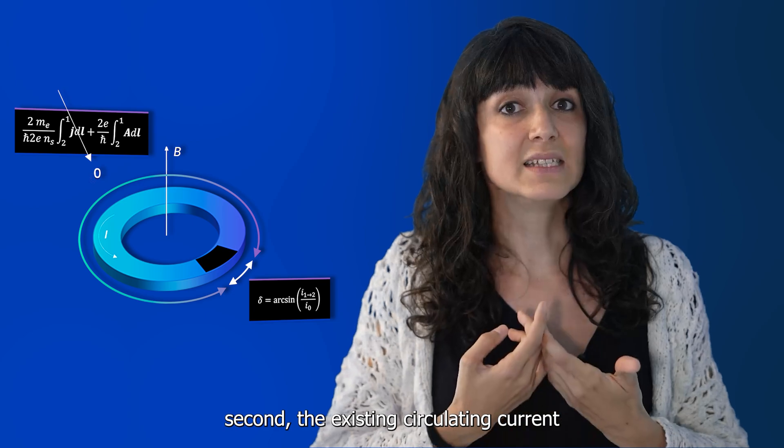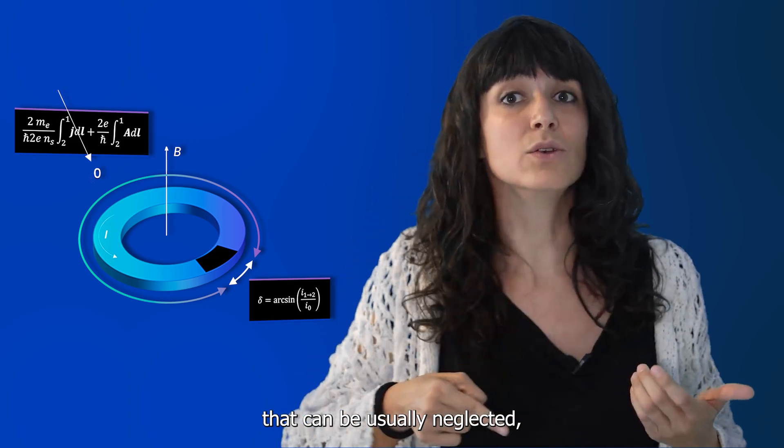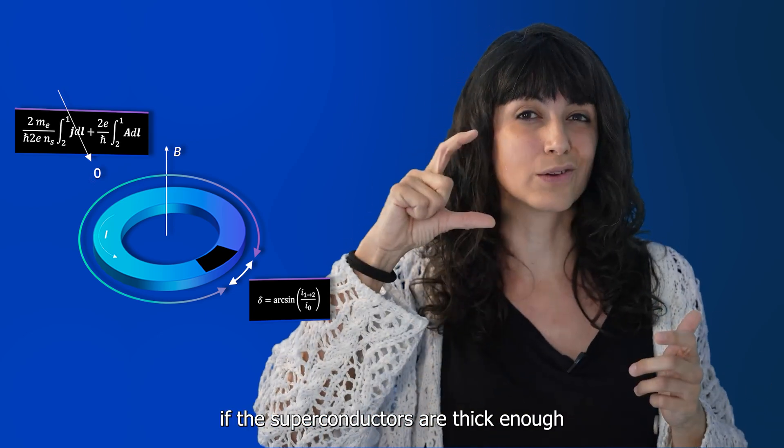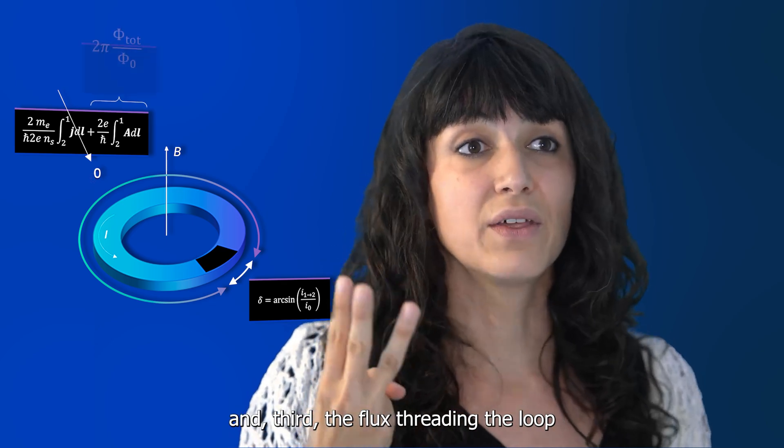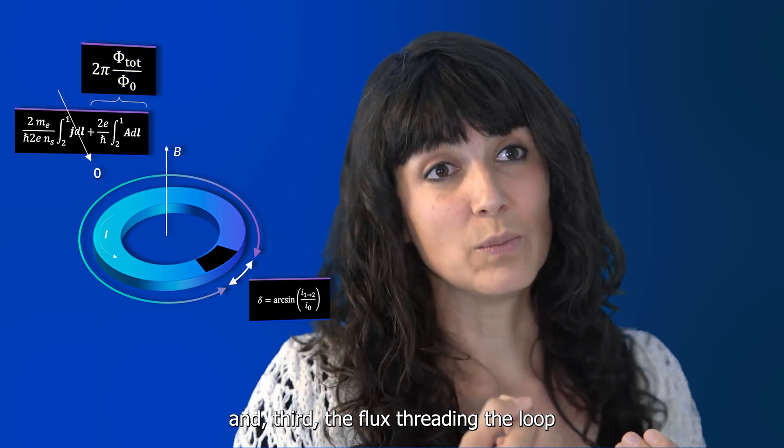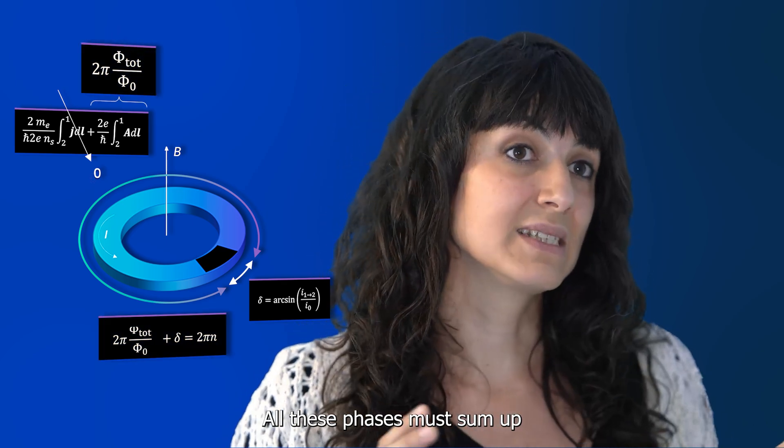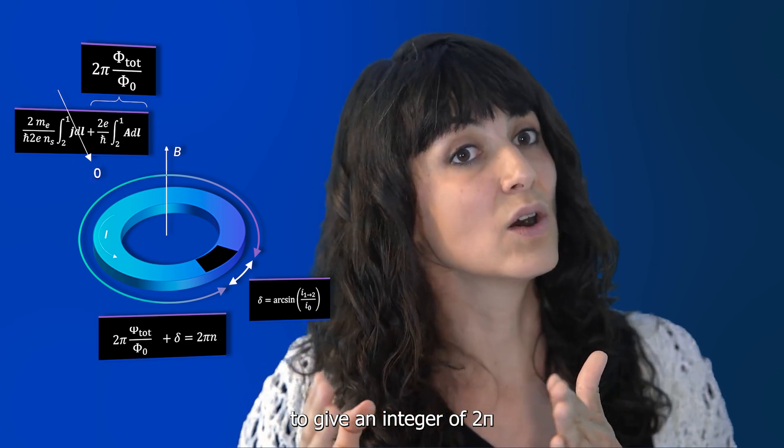Second, the existing circulating current that can be usually neglected if the superconductors are thick enough. And third, the flux threading the loop. All these phases must sum up to give an integer of two pi.